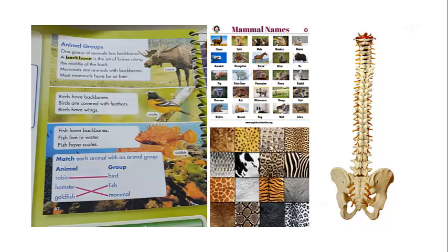Next line: mammals are animals with backbones. All these animals shown here are examples of mammals. Repeat after me: mammals. Mammals are a group of animals that have a backbone — keep that in mind. Next: most mammals have fur or hair, like you can see in this picture. A horse has long hair — it's a mammal and it has a backbone. So mammals have two things: first, they have backbones, and second, they have hair or fur.